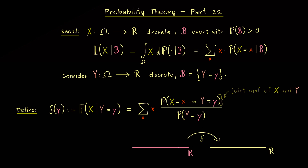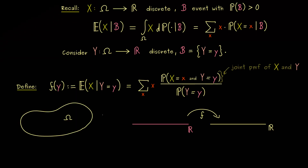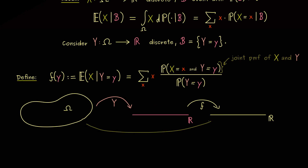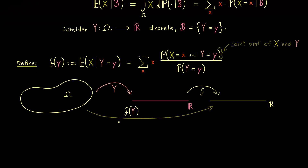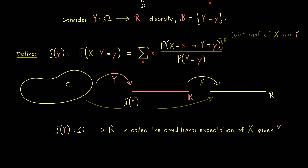More precisely, this function f maps ℝ into ℝ. On the other hand, we also have the random variable Y, which maps Ω into ℝ. This means we can look at the composition — we put the random variable Y into the function f, and write f(Y). This composition is a new random variable from Ω into ℝ, and exactly this is what we call the conditional expectation of X given the random variable Y — written E[X|Y]. For discrete random variables, this notion is not so complicated.